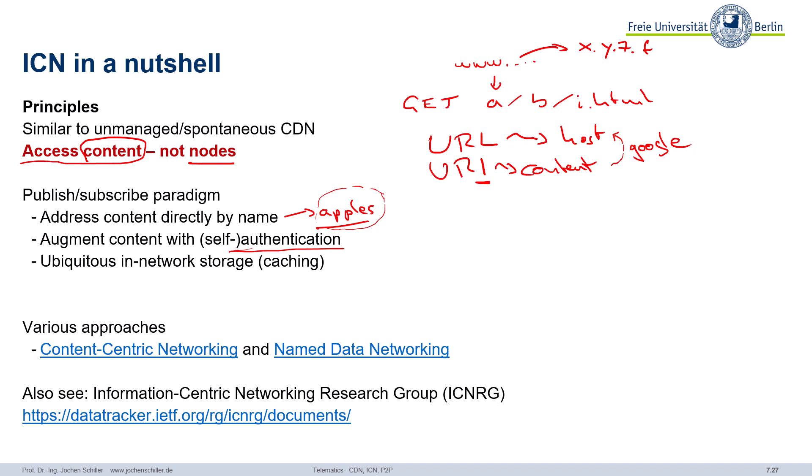Additionally, we augment the content with self-authentication, so I'm sure that this really is Apple content coming from an Apple expert. We also do a lot of in-network storage caching — maybe if I want information about Apple from the Apple expert, my neighbor also wants it, so you can access the cache. There are different approaches. Research groups at the IETF have proposed terms like content-centric networking, named data networking, and more — these were among the first ideas.